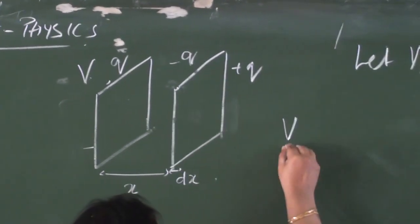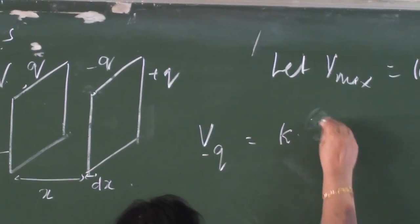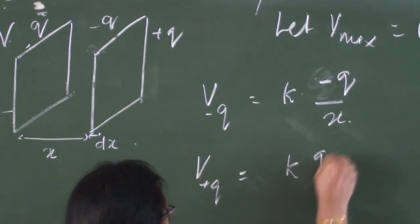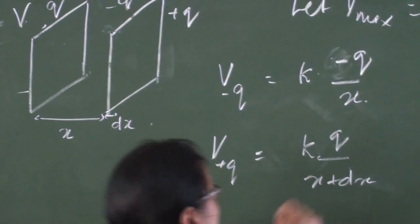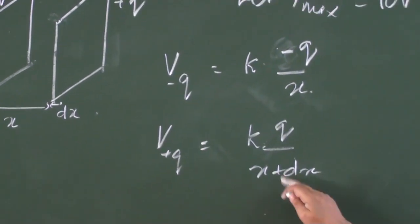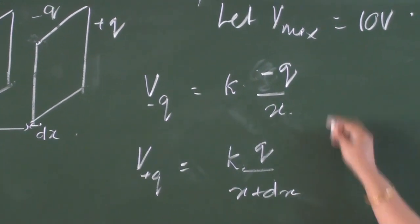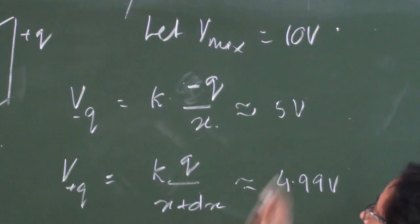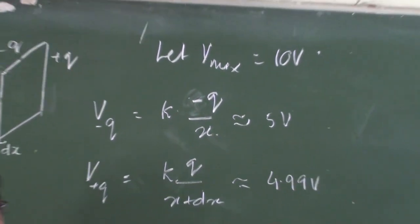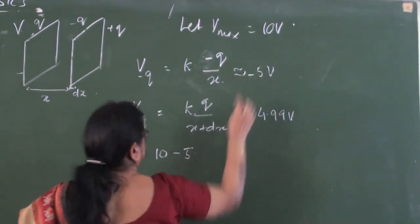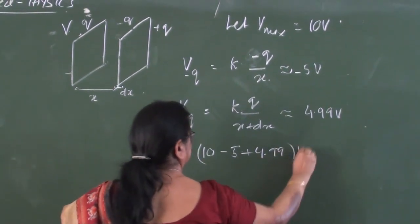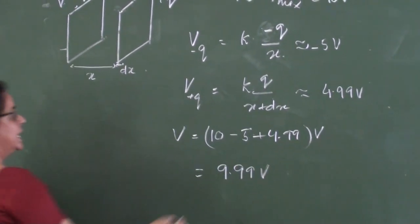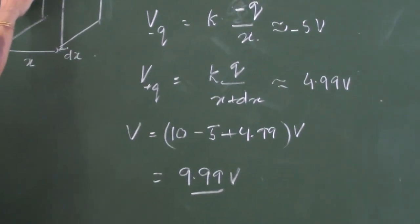The potential due to the negative induced charge will be K(−Q) by X, and the potential due to the positive induced charge will be KQ by (X + δ). Numerically, the negative potential is greater than the positive potential due to the difference in the denominator. Let us say the negative contribution is −5 volt and the positive is +4.99 volt. So the net potential of the first conductor becomes 10 − 5 + 4.99 volt, which means it has reduced to 9.99. The potential has reduced, but there is no change in the charge stored in this conductor.